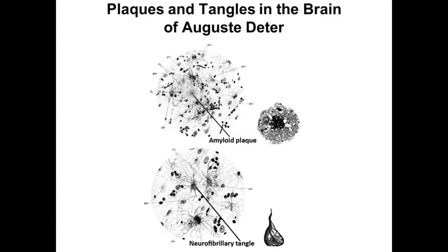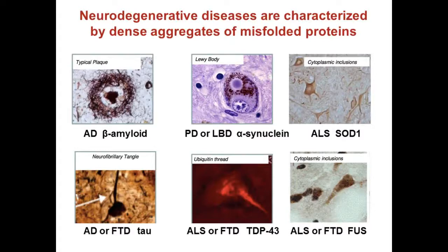Interestingly enough, if you look at other neurodegenerative diseases like Parkinson's disease, Lou Gehrig's disease, or frontotemporal dementia, you find similar aggregates of misfolded proteins. In each case, the primary protein in the aggregate is different, yet the fine structure of the aggregate — the cross-beta-sheet structure that the fibrils are comprised of — is in fact very similar in all of these diseases. And that suggests there may be some underlying misfolding mechanism that is common to all of them, and it's one of the reasons many people study multiple diseases.